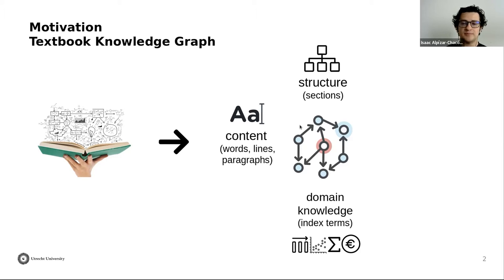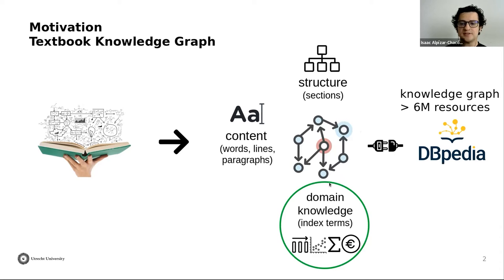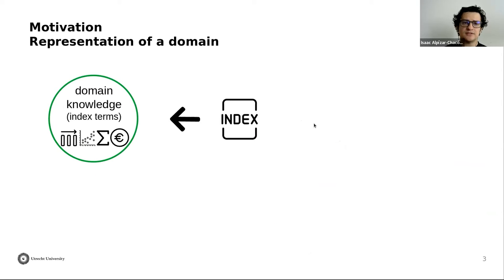For example, in a book about statistics we have terms like 'mean' or 'scatterplot.' One important aspect is that we have linked these knowledge graphs with information from DBpedia. Specifically, we can identify the index terms from the textbook that have a corresponding resource in DBpedia. So we have used the back-of-the-book index to create a representation of a domain, extracting knowledge about the domain using these terms.